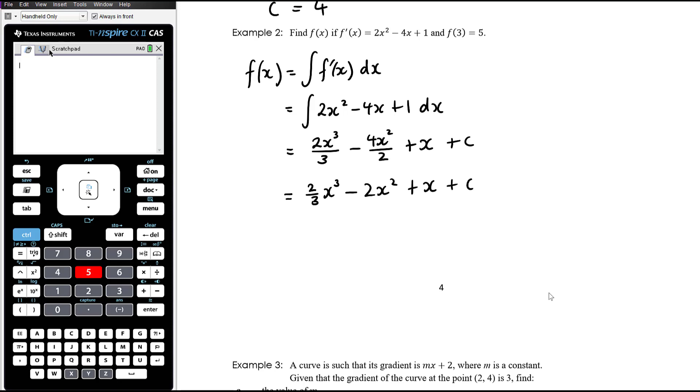Okay, so then we know that f(3) is equal to 5, so we want to substitute that information in. So f(3) means letting x equal 3, so 2 thirds times 3 cubed minus 2 times 3 squared plus 3 and plus c. And we know that that is equal to 5. So let's tidy this up. So 3 cubed is 27, 1 third of 27 is 9 and so therefore 2 thirds of 27 is 18. 3 squared is 9 times 2 is 18 plus 3 plus c equals 5. So those 18s are cancelling out. 3 plus c is 5 and so therefore c is 2.